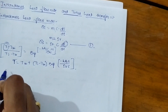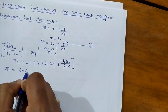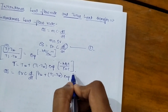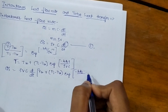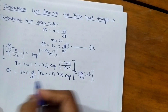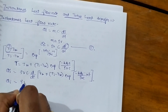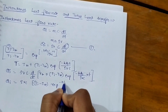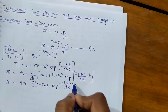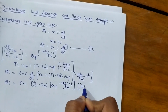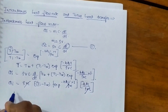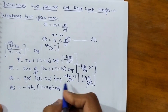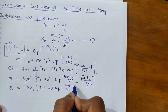So qi = ρVc · d/dt [T∞ + (Ti - T∞)·exp(-h·As·t / ρVc)]. Differentiating, the ρVc terms cancel, and qi = -h·As·(Ti - T∞)·exp(-h·As / ρVc · t).